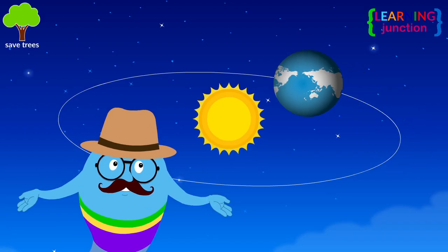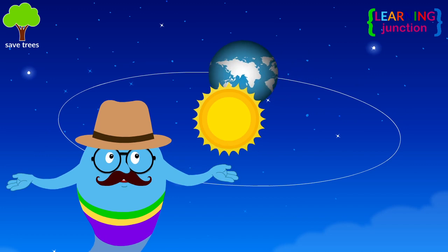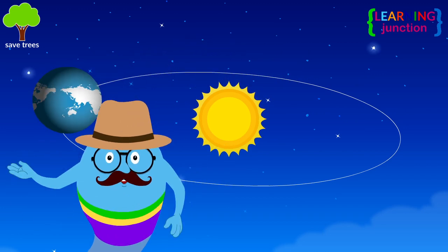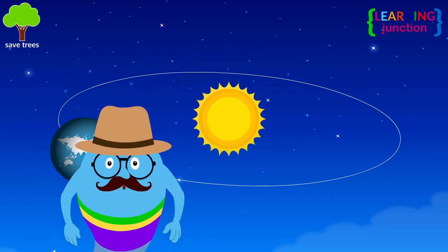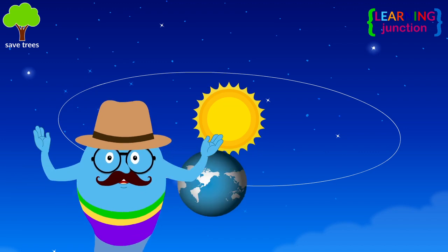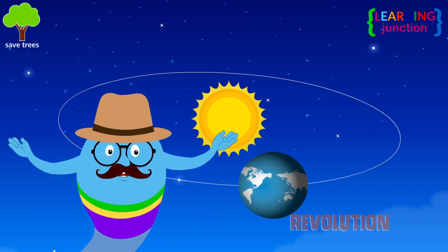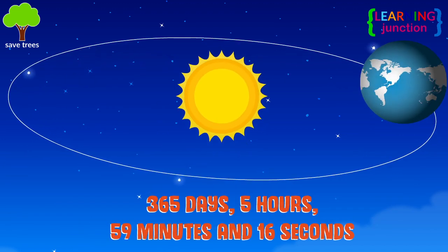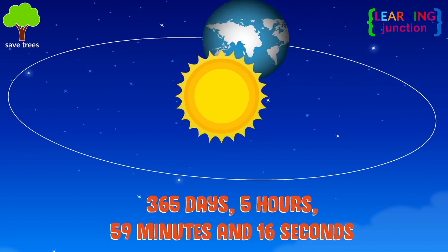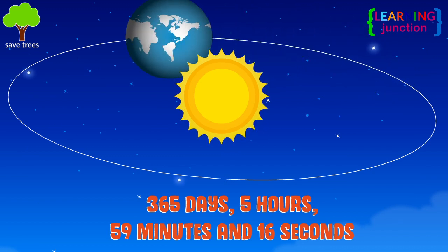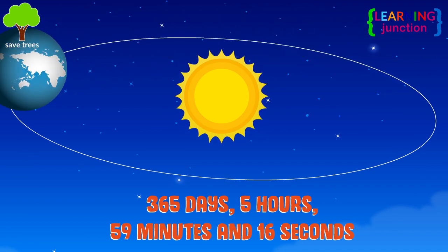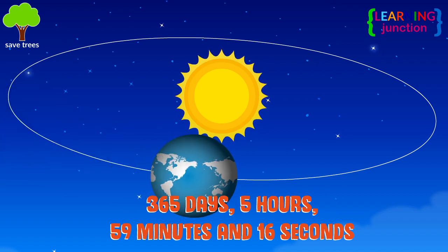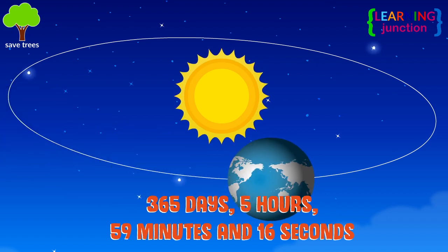At the same time that the Earth spins on its axis, it also orbits or revolves around the Sun. This movement is called revolution. It takes 365 days, 5 hours, 59 minutes, and 16 seconds — or one year — for the Earth to make one full revolution around the Sun.